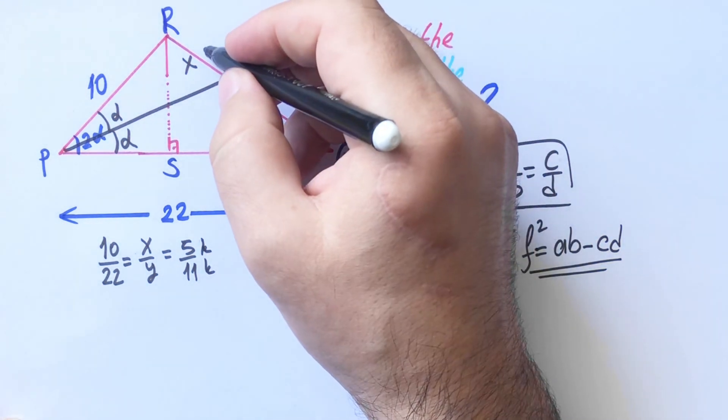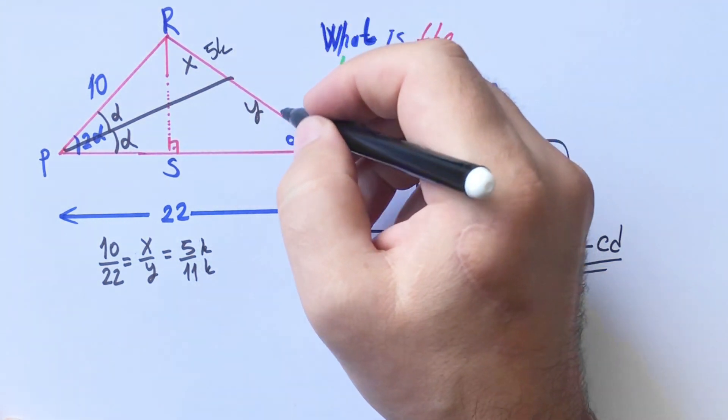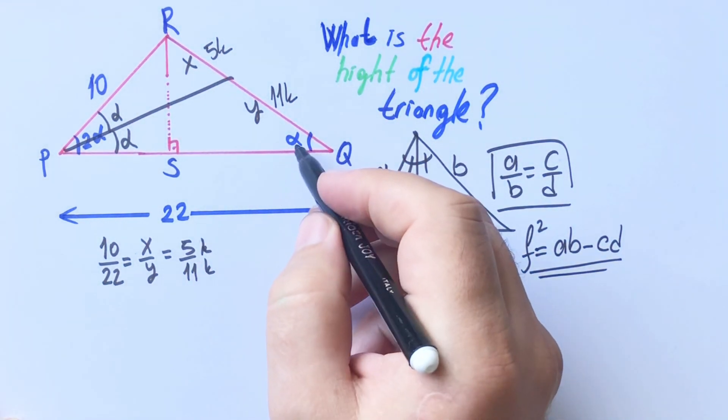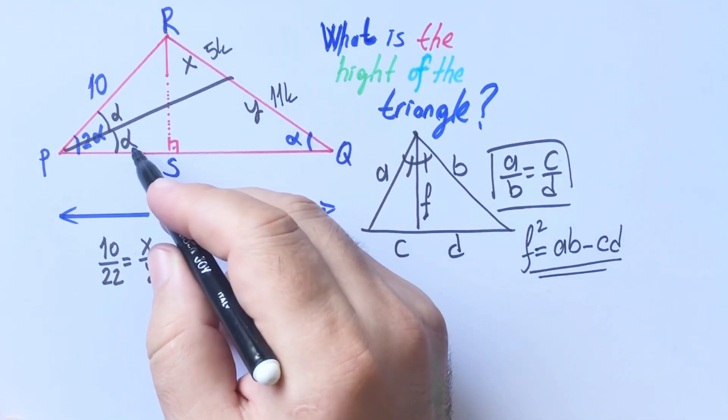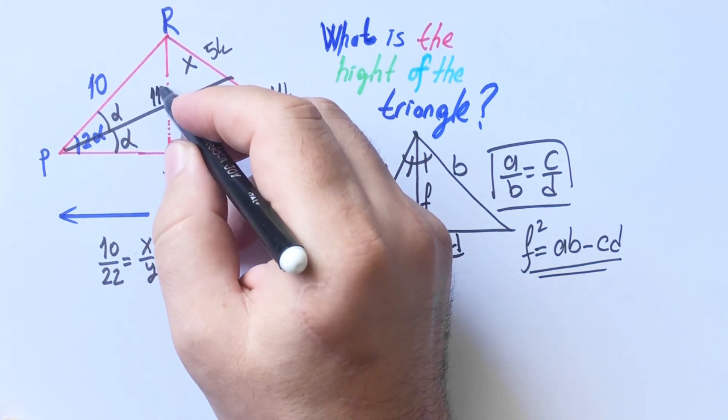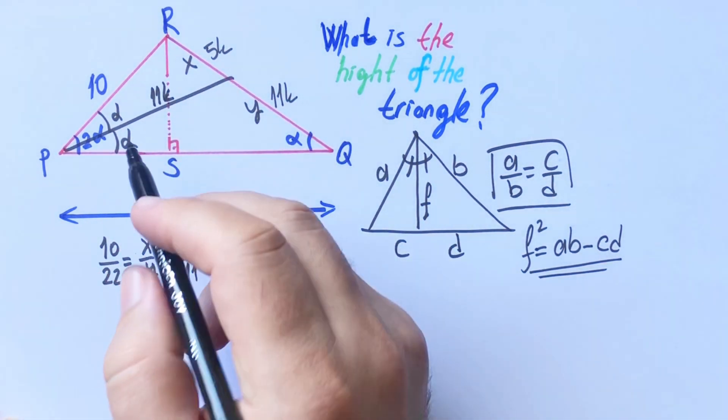Let's write here 5k and 11k. These two angles are equal so this triangle is isosceles triangle, so here will be 11k.